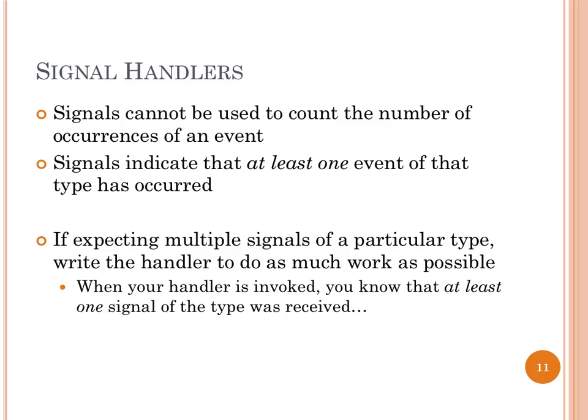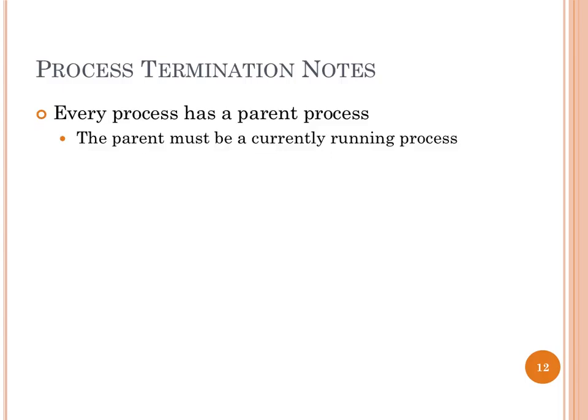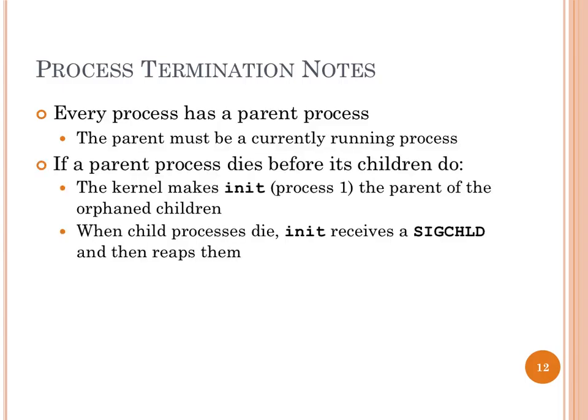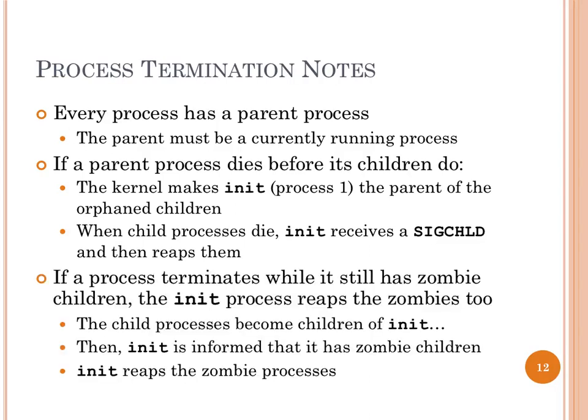One thing I didn't work on at Microsoft was Windows — well, I worked on it but didn't work on it, if you know what I mean. Anyway, every process has a parent that must be currently running. If a parent dies before the child, the OS makes the ancestor process the parent of that child. That way, who gets the signal when the child terminates? The ancestor process, which can do the right thing to make sure system resources are not left unreclaimed. If a process terminates while it still has zombie children, init gets the zombie children, calls wait on them, and everything works perfectly. Nice simple model.